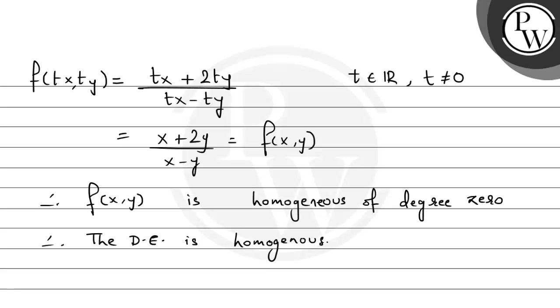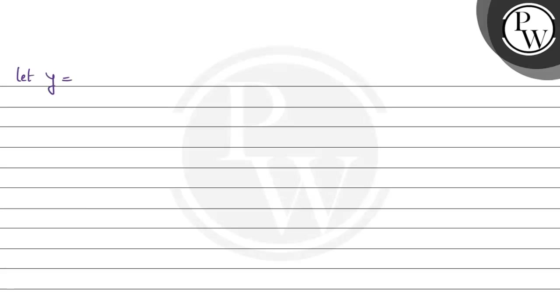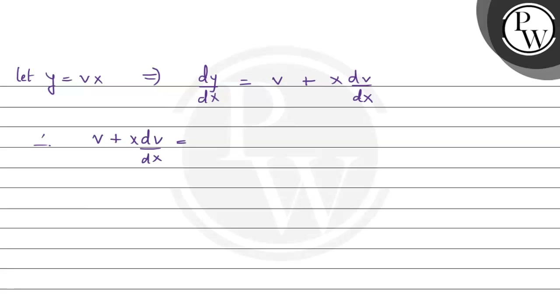To solve this, use the substitution y equals v times x, where v is a function of x. Differentiating using the product rule gives dy/dx equals v plus x times dv/dx. Substituting into the differential equation, the left side becomes v plus x dv/dx, and the right side becomes (x plus 2vx)/(x minus vx).